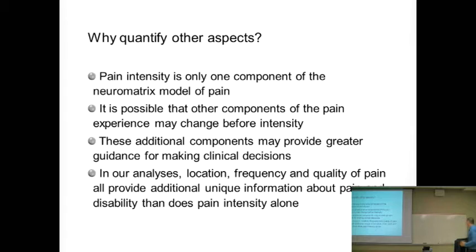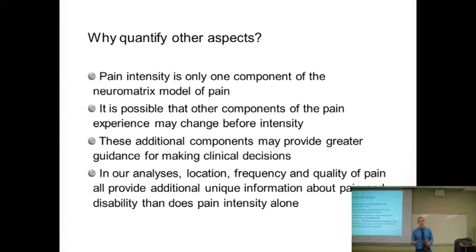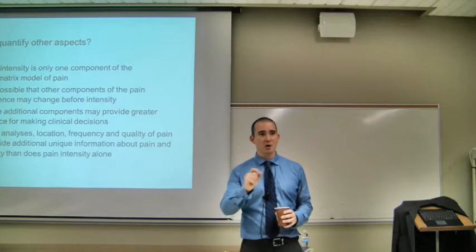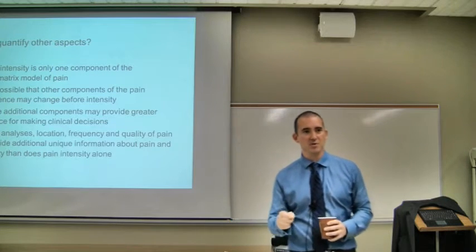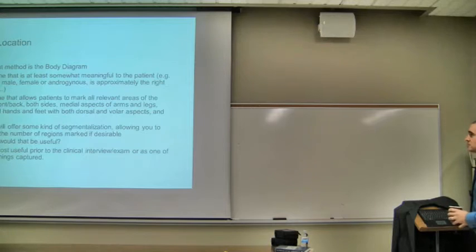We should think about measuring other aspects of this sensory discriminative component than just intensity, and they don't need to be difficult. Every time I analyze neck pain-related disability using different statistical models, pain intensity usually stays in there — there's a relationship between intensity and disability. But location, meaning the number of areas on the body, also stays in there. Frequency is often retained too. These things are telling us something different, each adding meaningful understanding of the patient's disability.